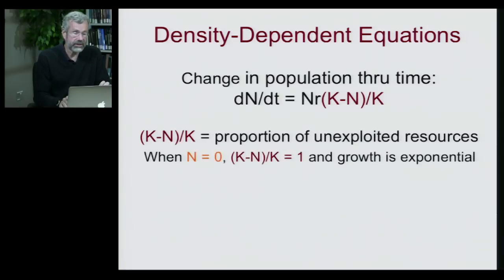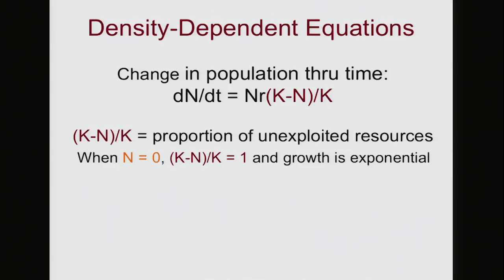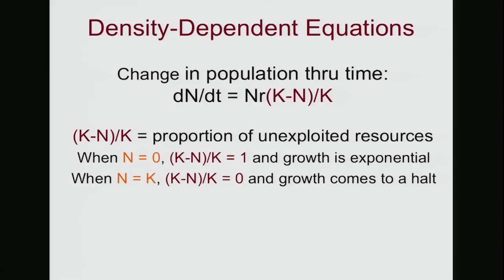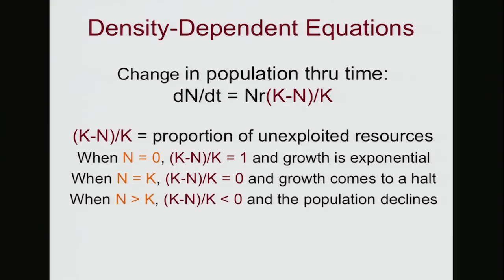To think about this intuitively, we set n equal to zero — essentially nobody in the population. Then (K minus zero) divided by K equals one, and population growth is exponential because r is the only thing influencing growth. But when n equals K, the term (K minus n) equals zero, so there are no more resources left and growth comes to a halt. When n exceeds K, this algebraic term becomes negative and the population declines back down towards the carrying capacity. So (K minus n)/K is a very simple algebraic tool to capture the essence of density-dependent equations.